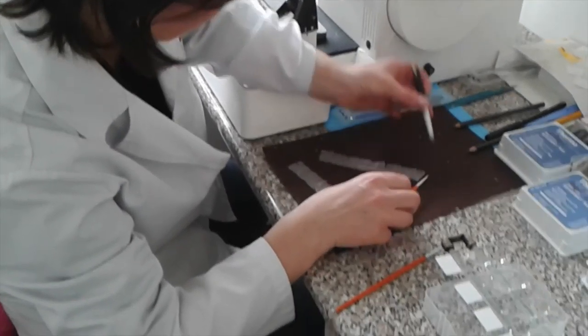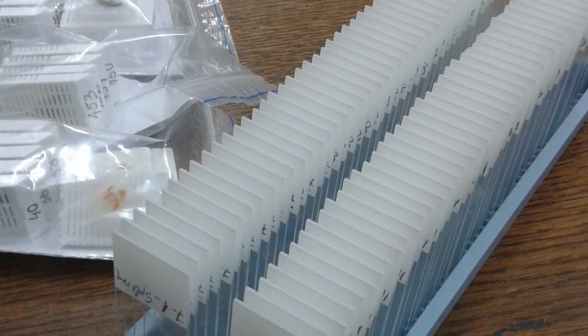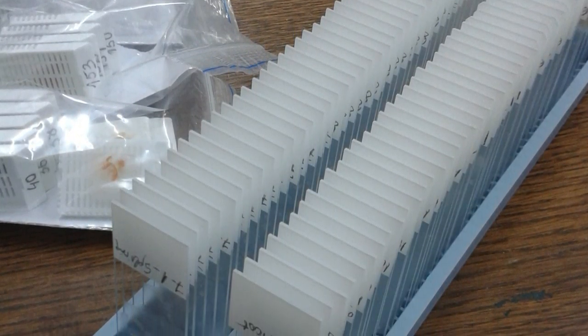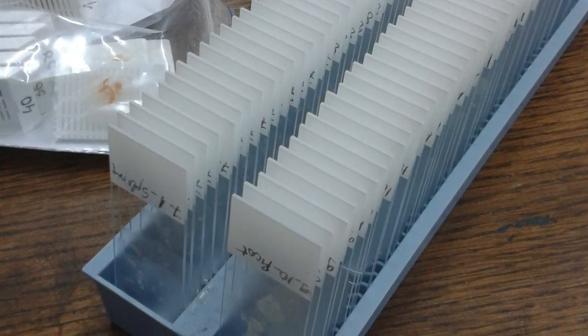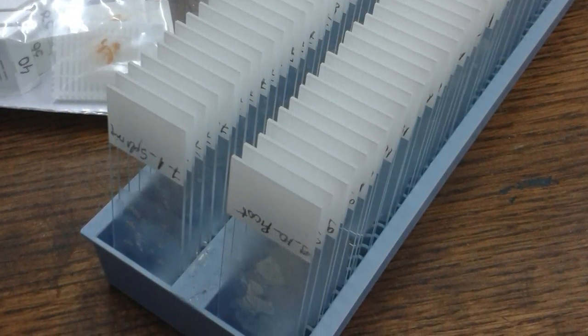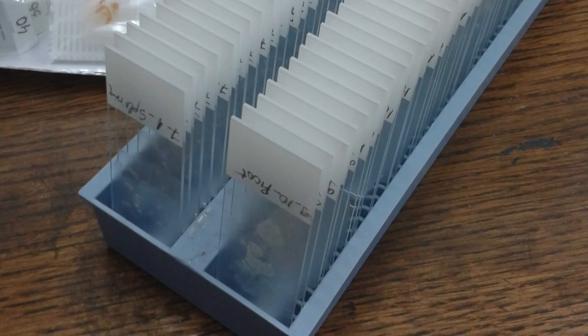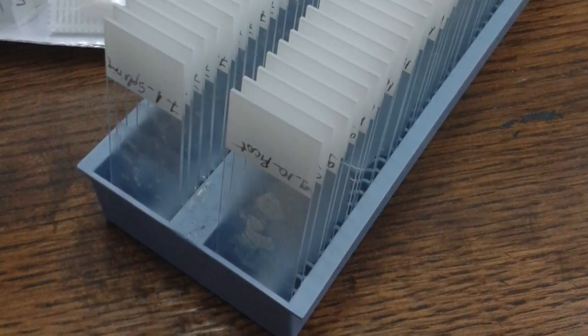Finally, we obtain the slides with the paraffin embedded specimens after they were sectioned, dried at 37 degrees Celsius overnight plus 2 hours at 60 degrees Celsius and cooling at room temperature. These slides will go through staining, cover slipping, sealing and mounting.